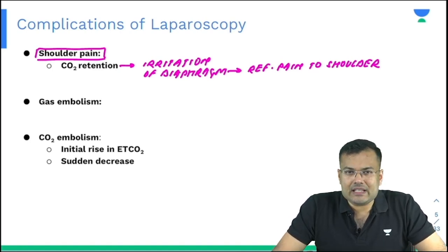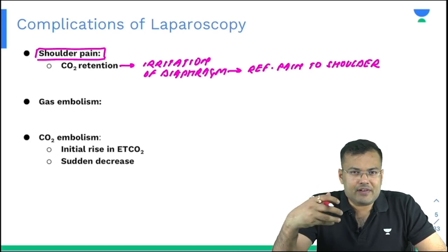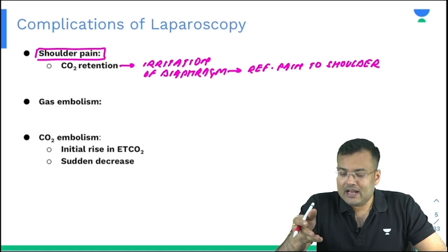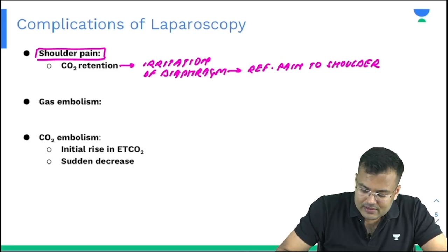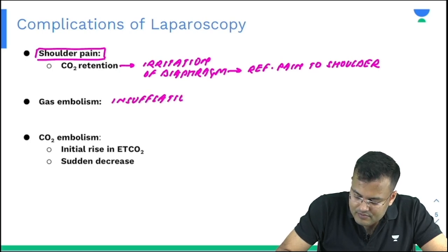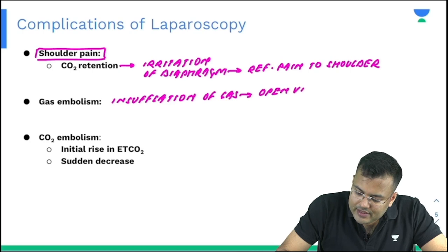The second complication is gas embolism. During induction of pneumoperitoneum, sometimes there is insufflation of gas directly into an open vein, which can lead to gas embolism.